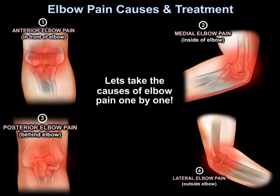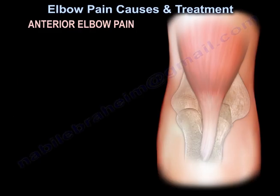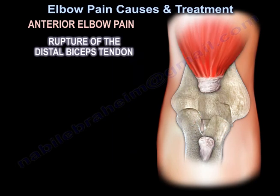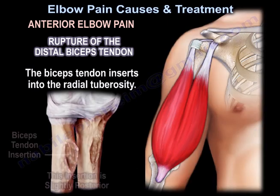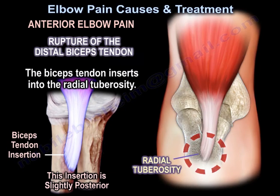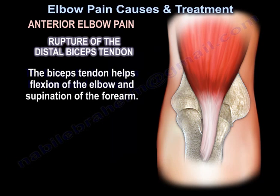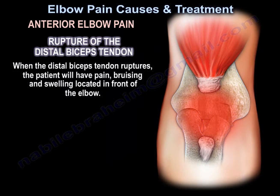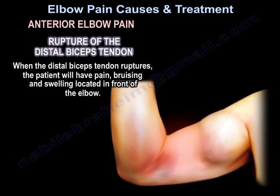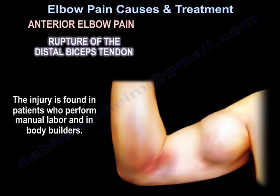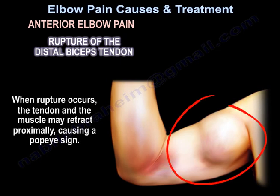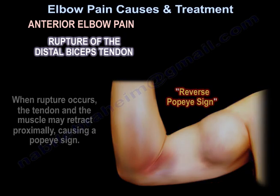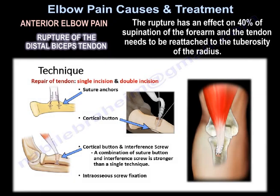The anterior elbow pain: distal biceps tendon rupture. The biceps helps in flexion of the elbow and supination of the forearm. When the distal biceps tendon ruptures, the patient will have pain, bruising, and swelling located in front of the elbow. The injury is found in patients who perform manual labor and in bodybuilders. When rupture occurs, the tendon and muscle may retract proximally causing a Popeye sign. The rupture affects 40% of supination of the forearm and the tendon needs to be reattached to the tuberosity of the radius.